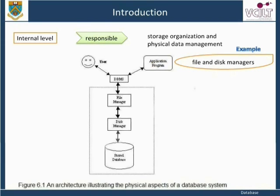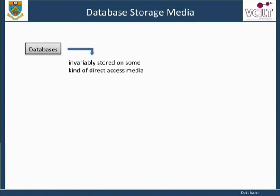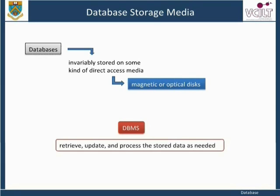Figure 6.1 illustrates an architecture of a database system. Physically, databases are almost invariably stored on some kind of direct access media such as magnetic or optical disks. The DBMS can then retrieve, update, and process the stored data as needed.